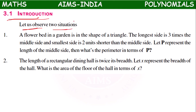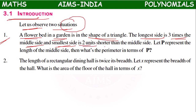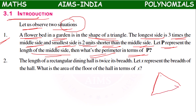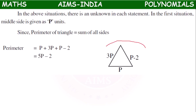So, let us observe two given situations. The first situation is: a flower bed in a garden is in the shape of a triangle. The longest side is three times the middle side, and the smallest side is two units shorter than the middle side. Let P represent the length of the middle side. What is the perimeter in terms of P? The flower bed is in the shape of a triangle, with a middle side, longest side, and shortest side.